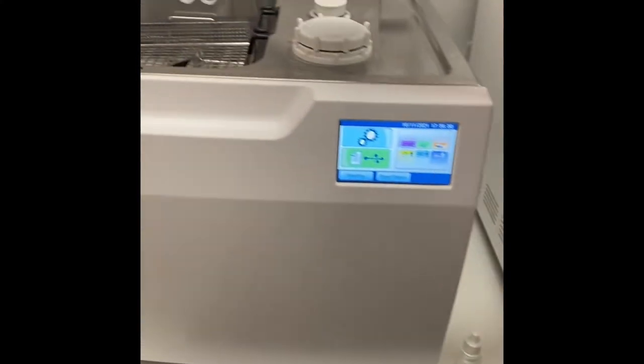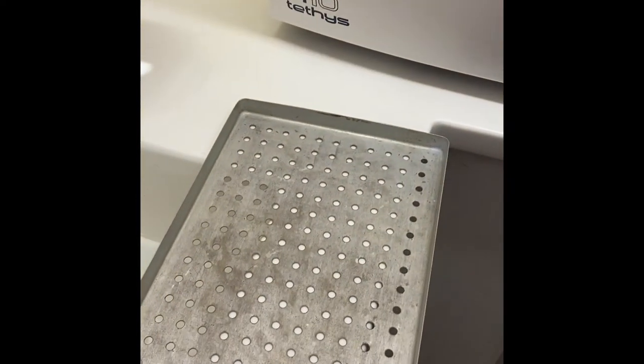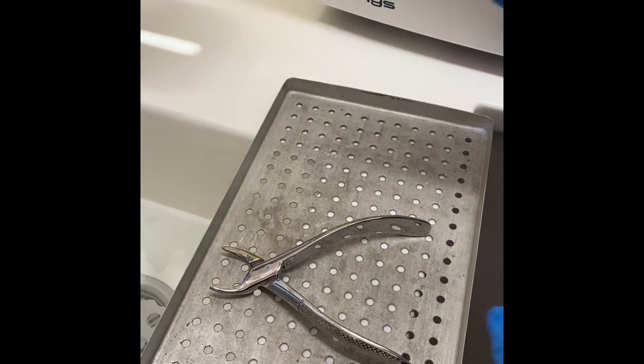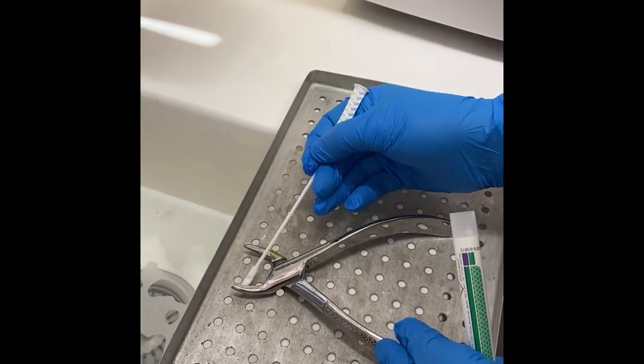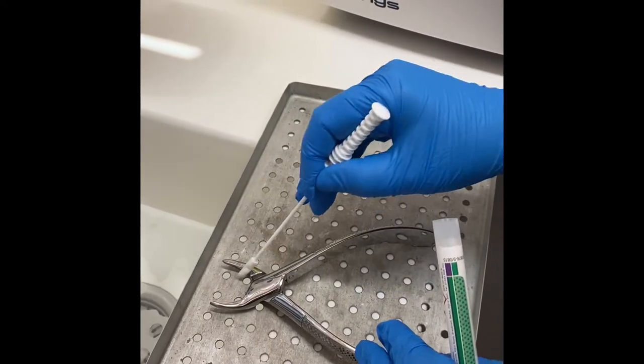Remove the instruments after they've been through the wash disinfector cycle. Pop the instrument onto a tray, take the swab, and now thoroughly remove the swab around the instrument, making sure it goes into all the little nooks and crannies and hinges.